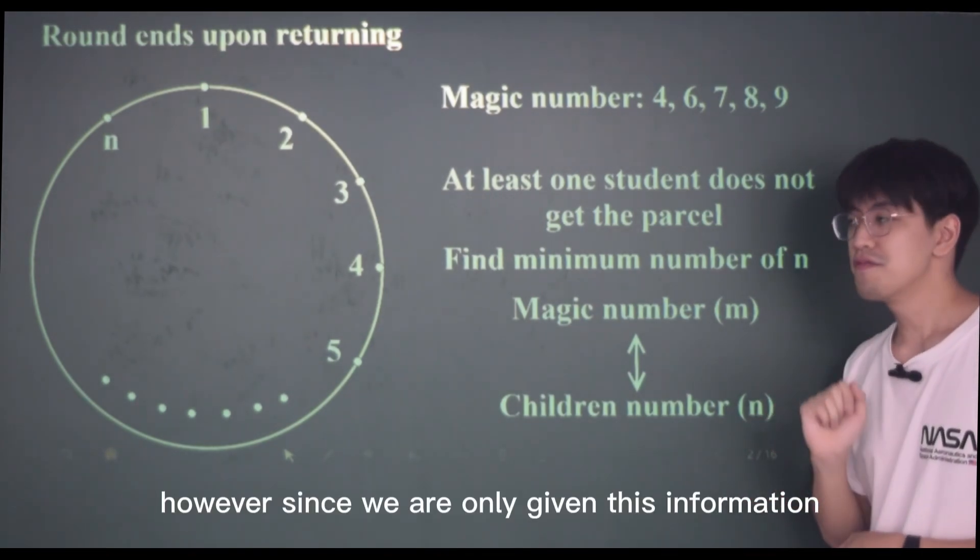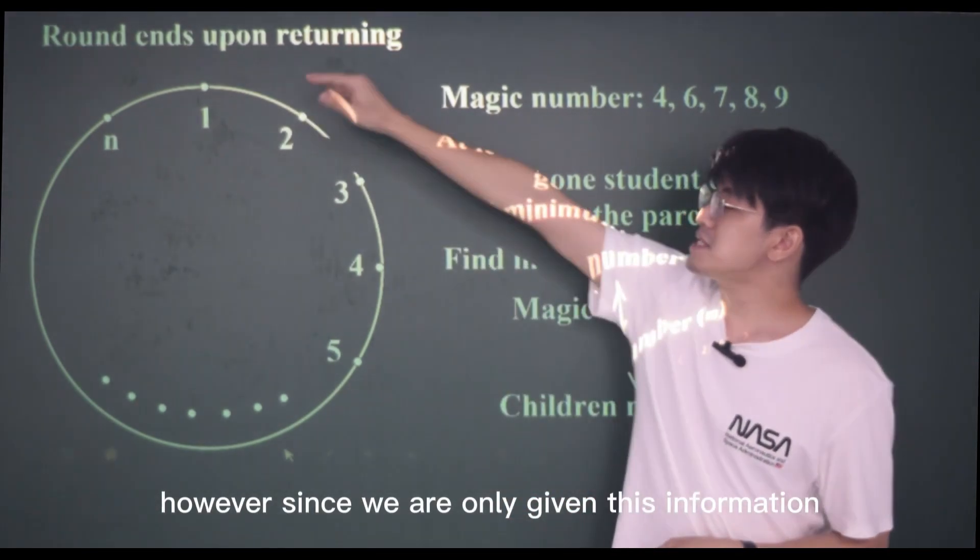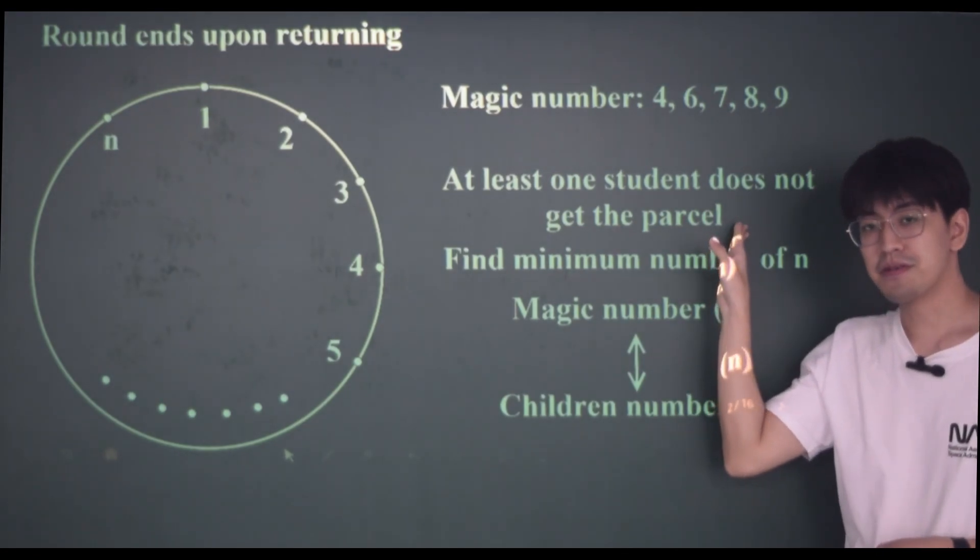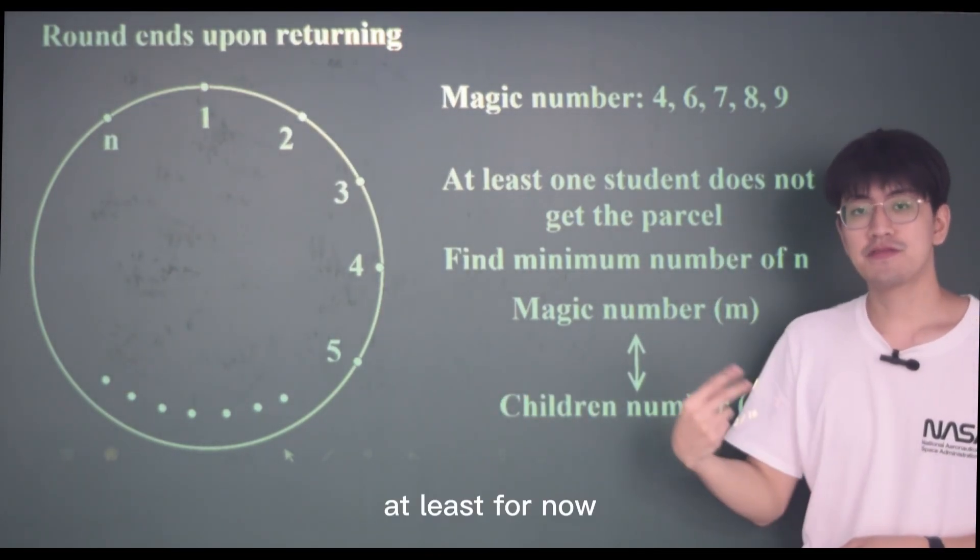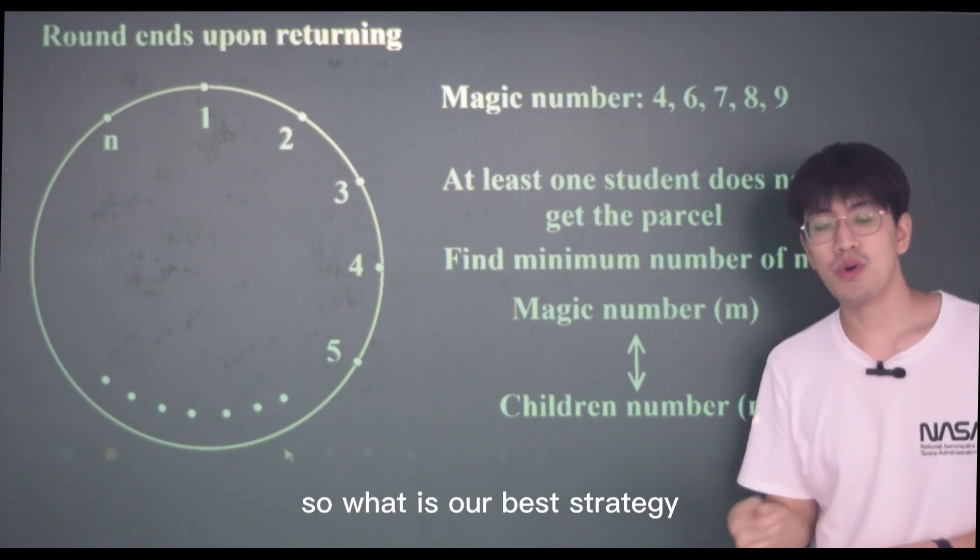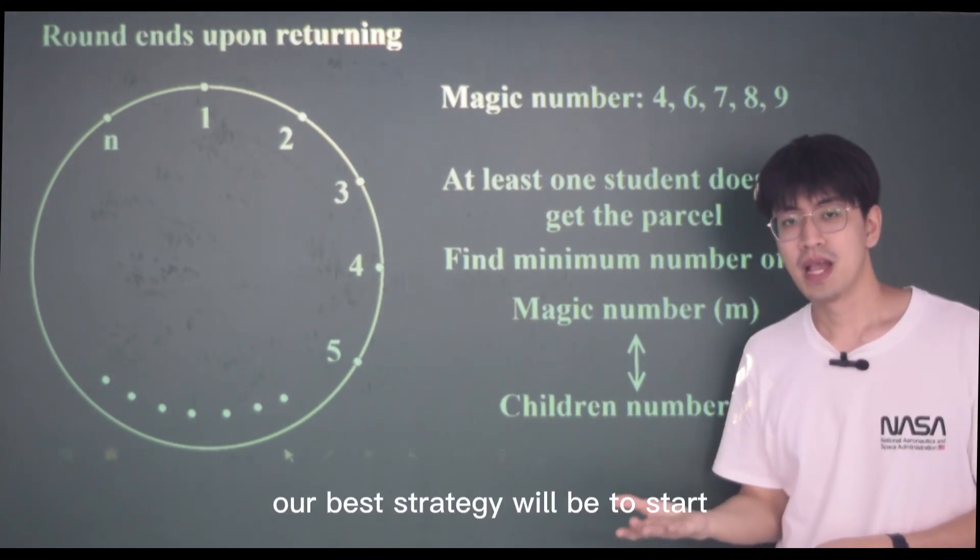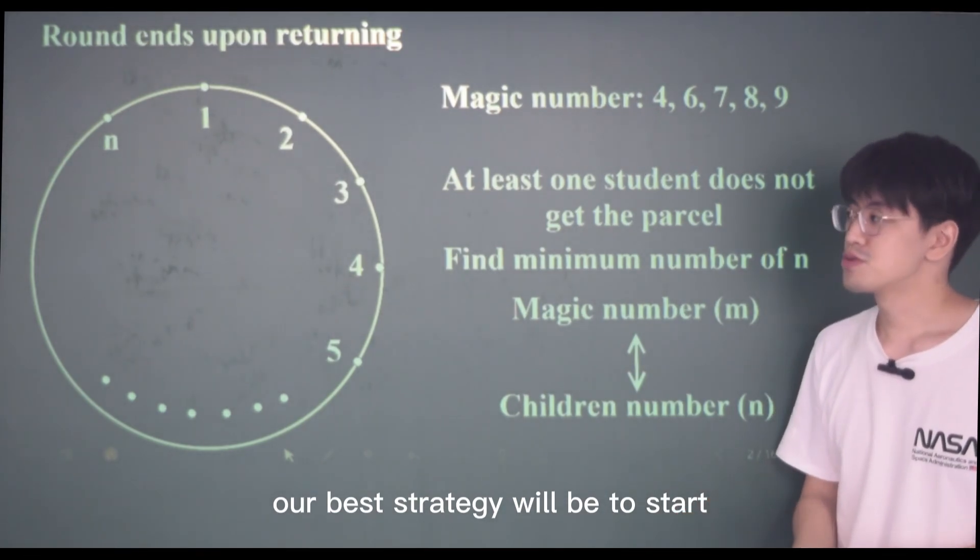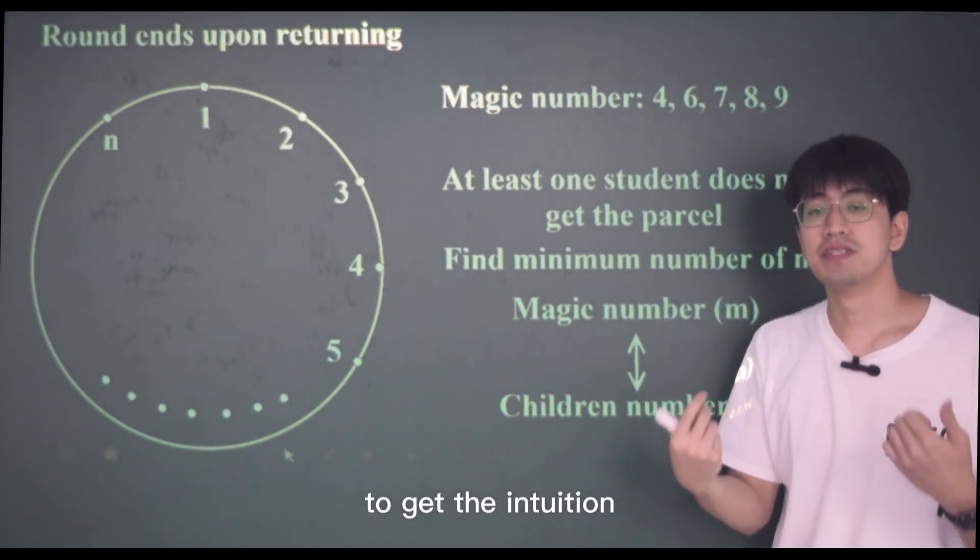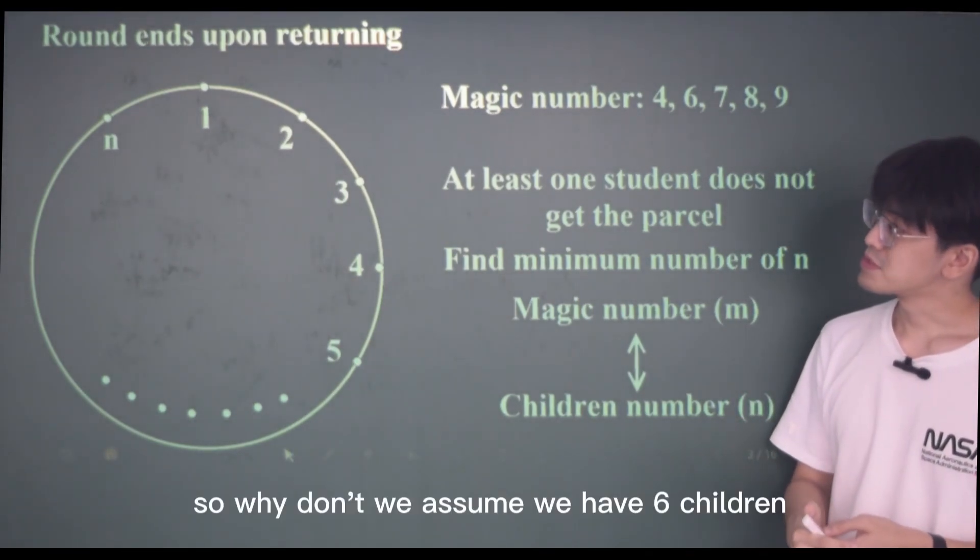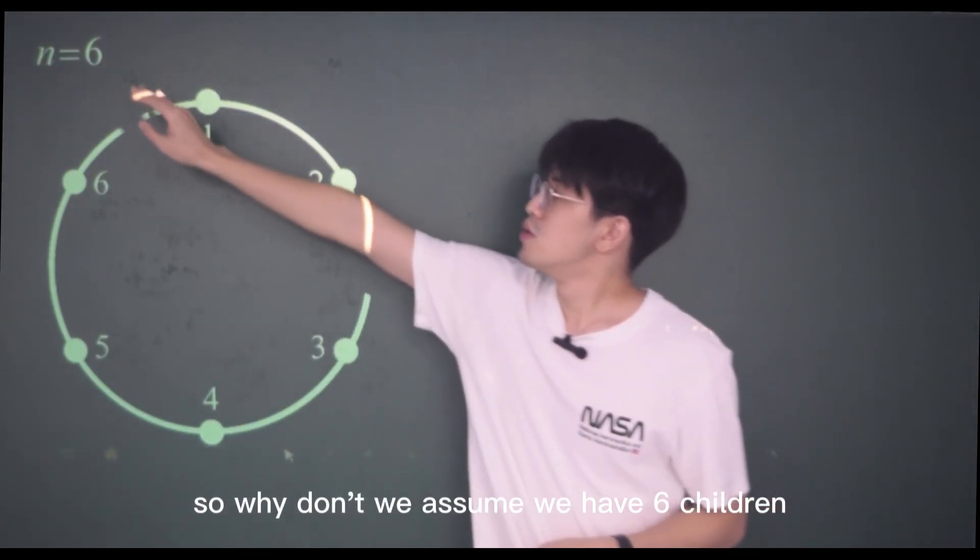Since we are only given this information, the relationship seems pretty vague, at least for now. So what is our best strategy? Our best strategy would be to start with some simple examples first to get the intuition. So why don't we assume we have six children?